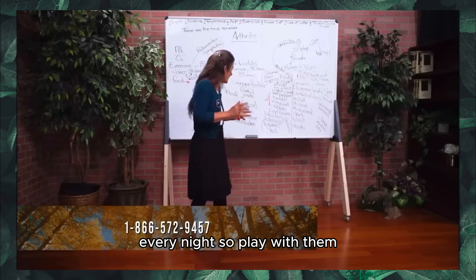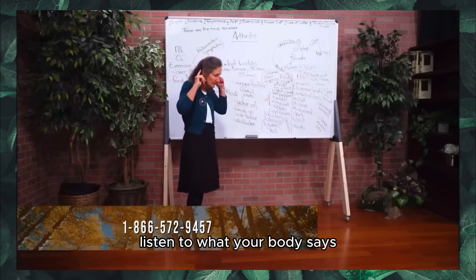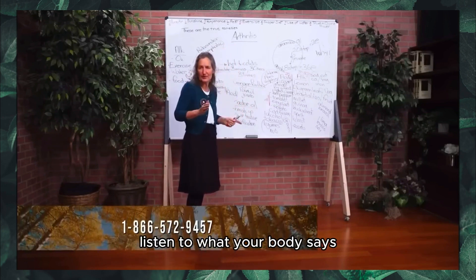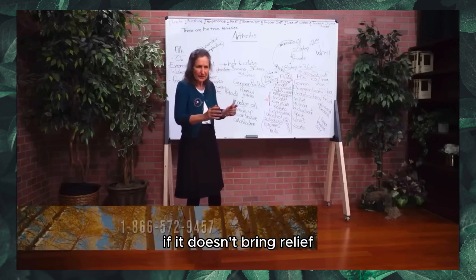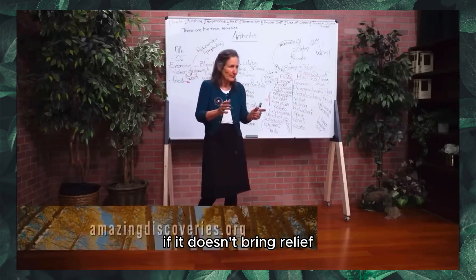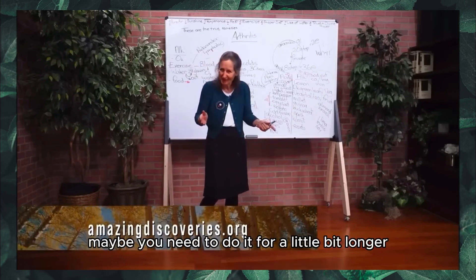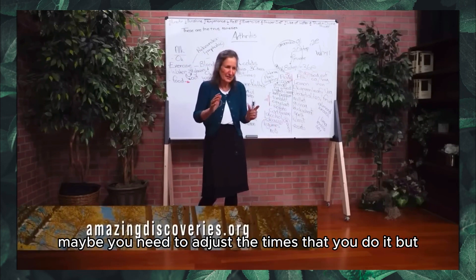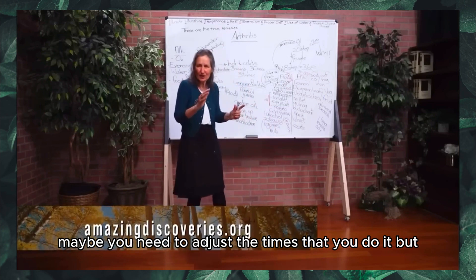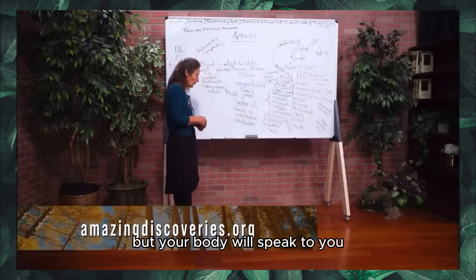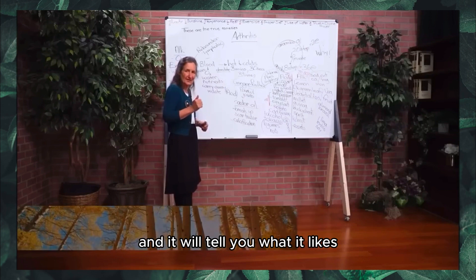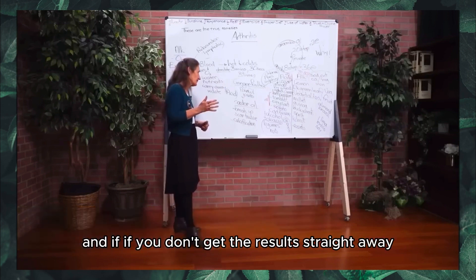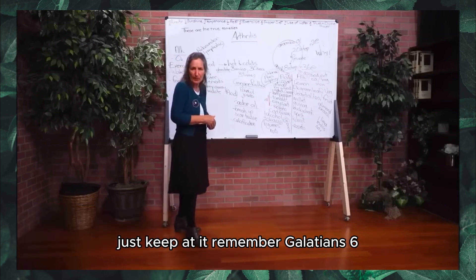Castor oil is a gentler but actually quite powerful poultice. It can break up bone spurs and any calcification anywhere in the body. It penetrates deeper than any other oil, and wherever it penetrates, it can break up congestion, scar tissue, and calcifications. The more serious and longer-standing the condition, the longer it takes. For swollen joints, you might do the ginger poultice for a few hours and then the castor oil overnight every night. Listen to what your body says — if it brings relief, do it.